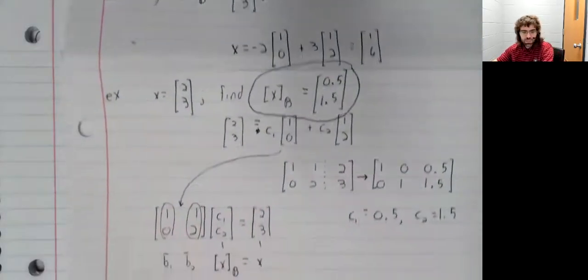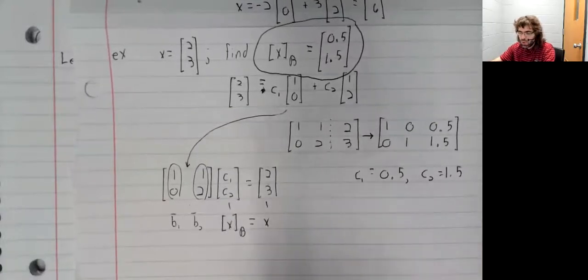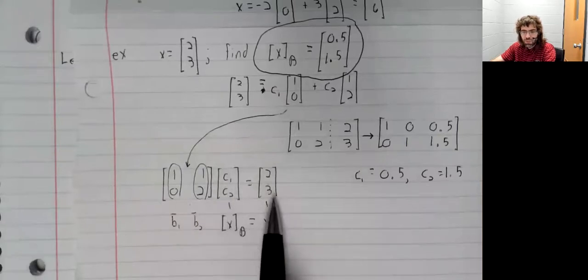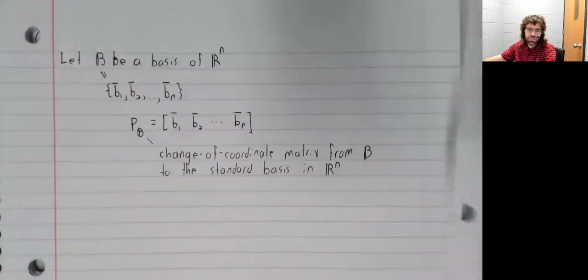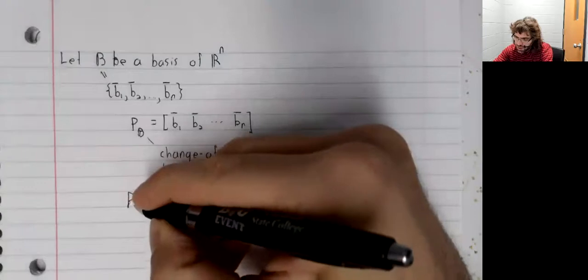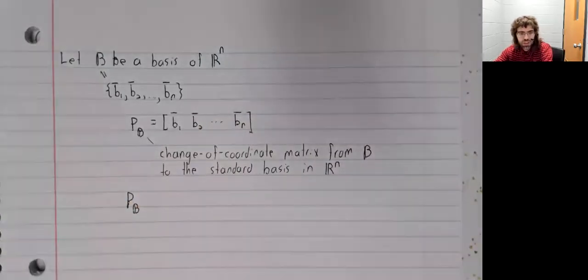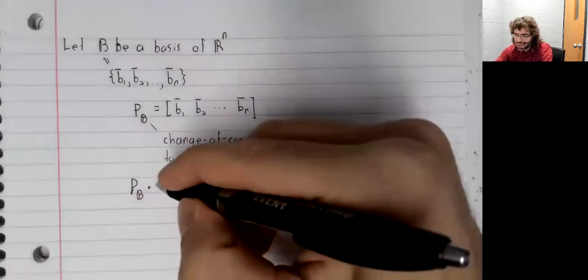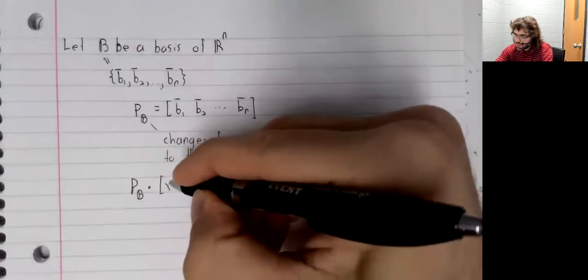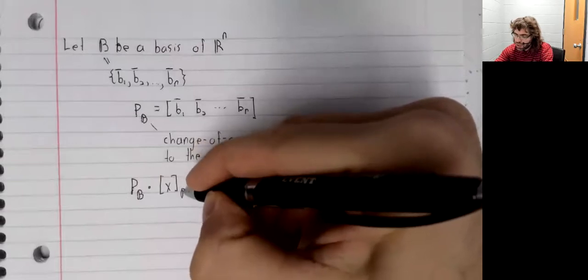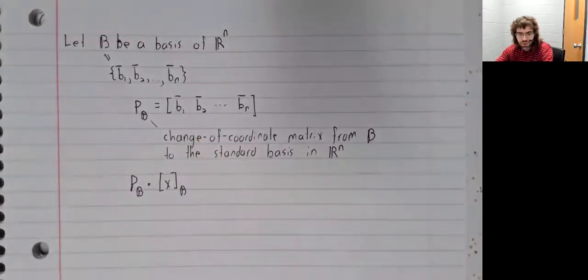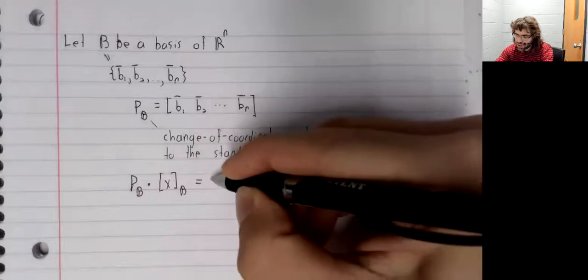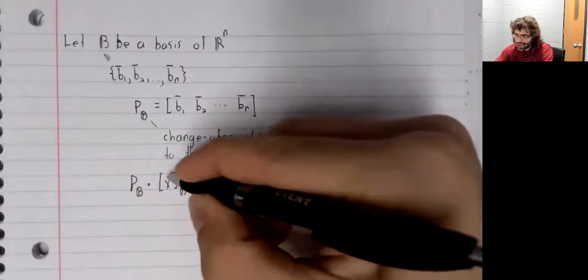So again, looking at this example, P sub B times the coordinate vector equals x. And that's true in general. If we take this matrix P sub B and we multiply it by the coordinate vector of x with respect to B, we get the vector x.